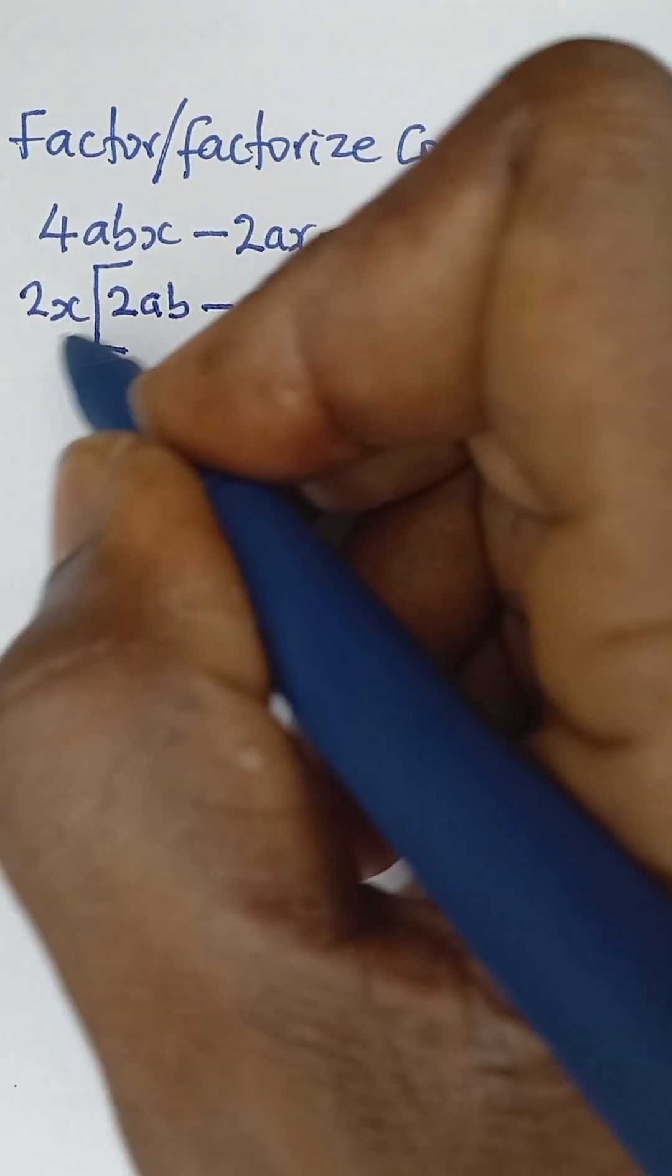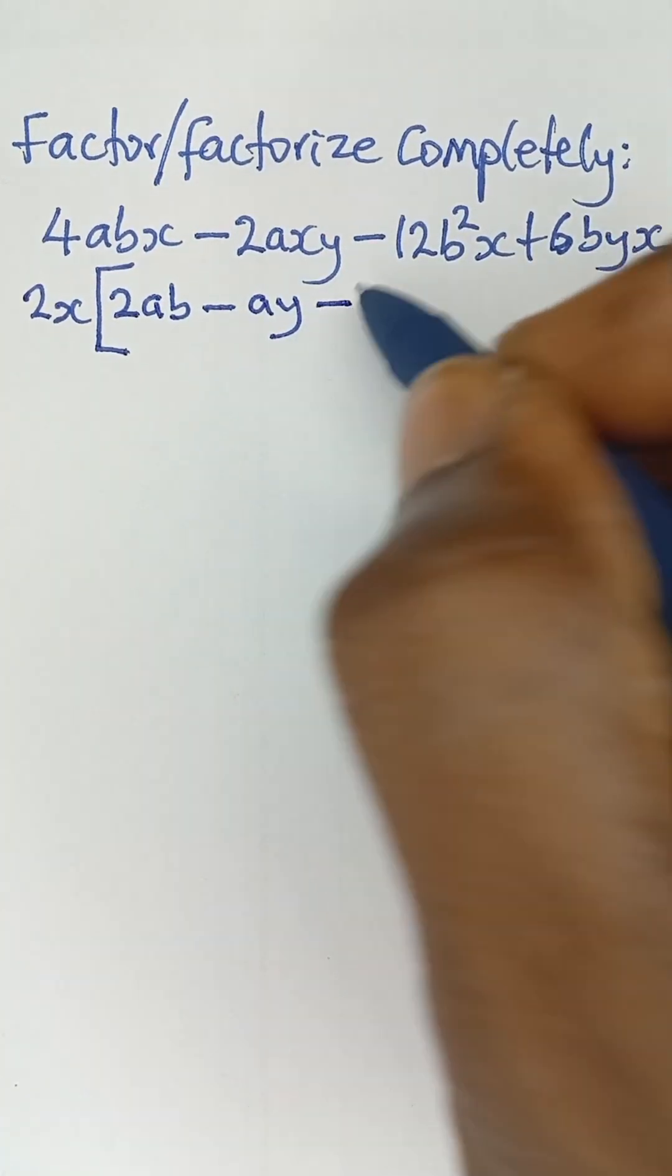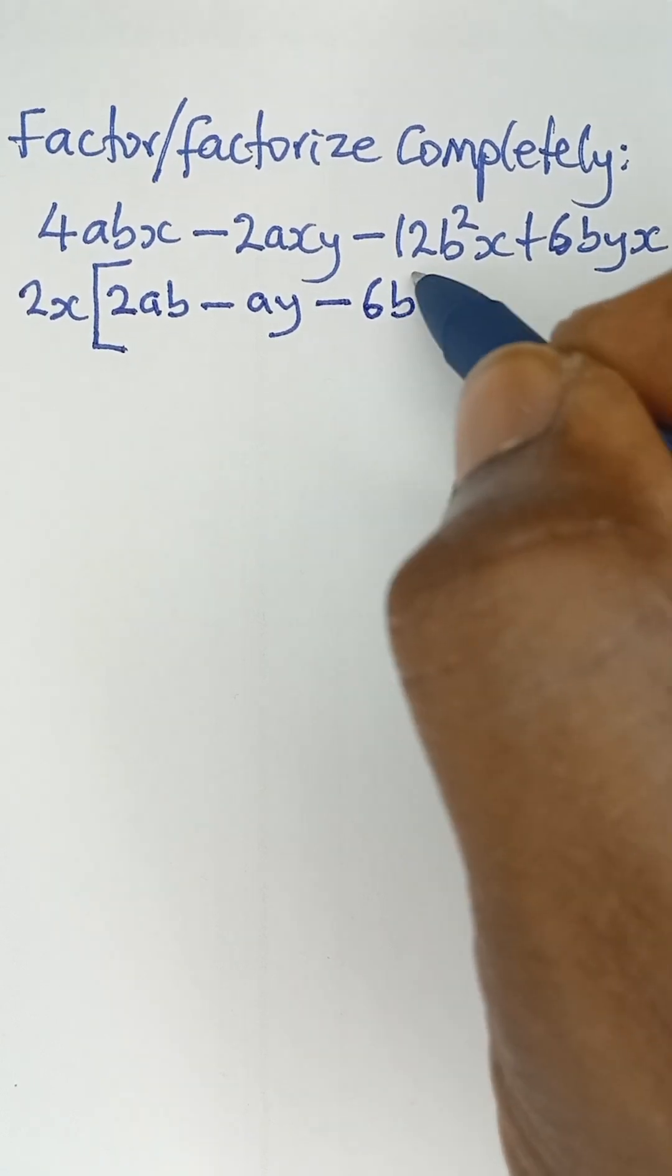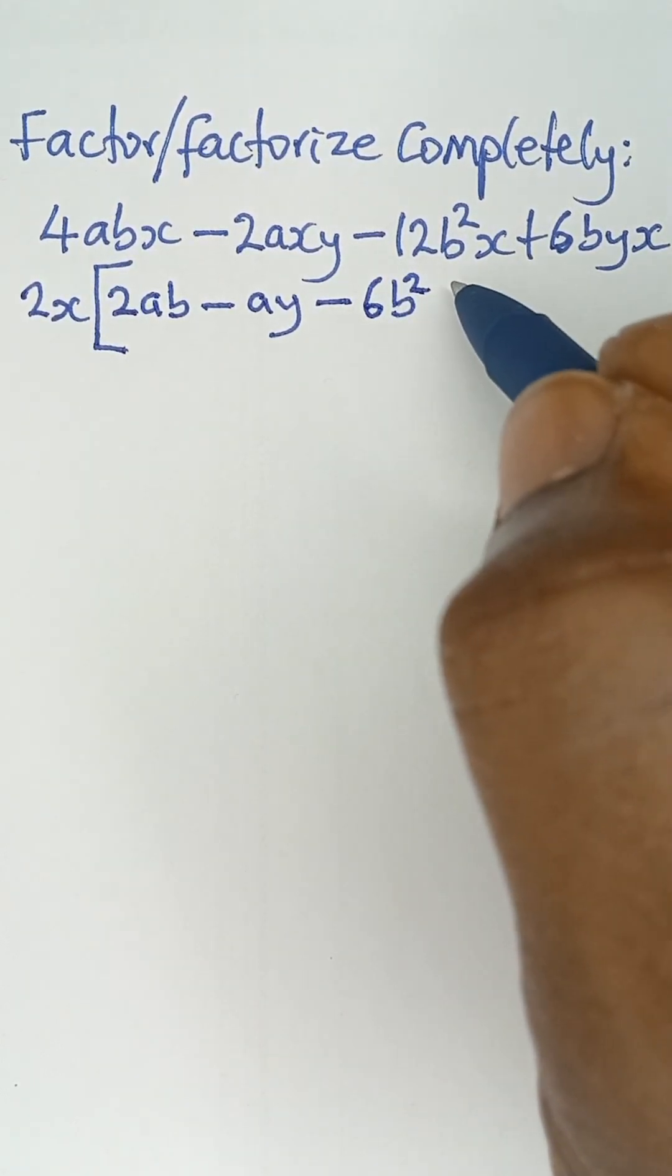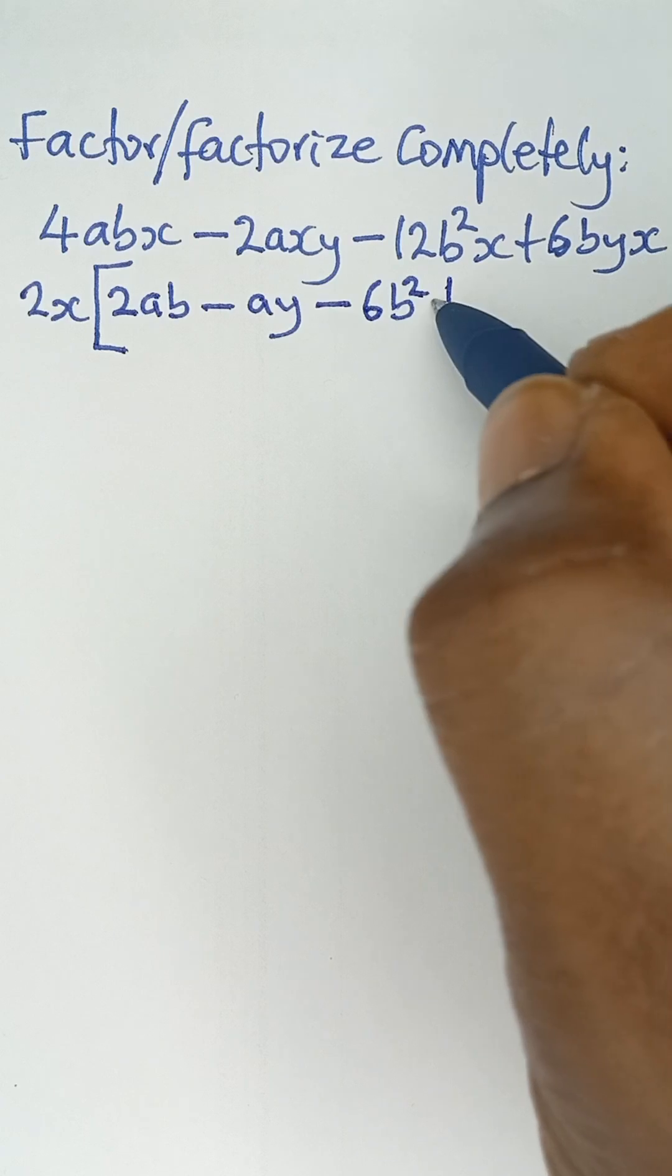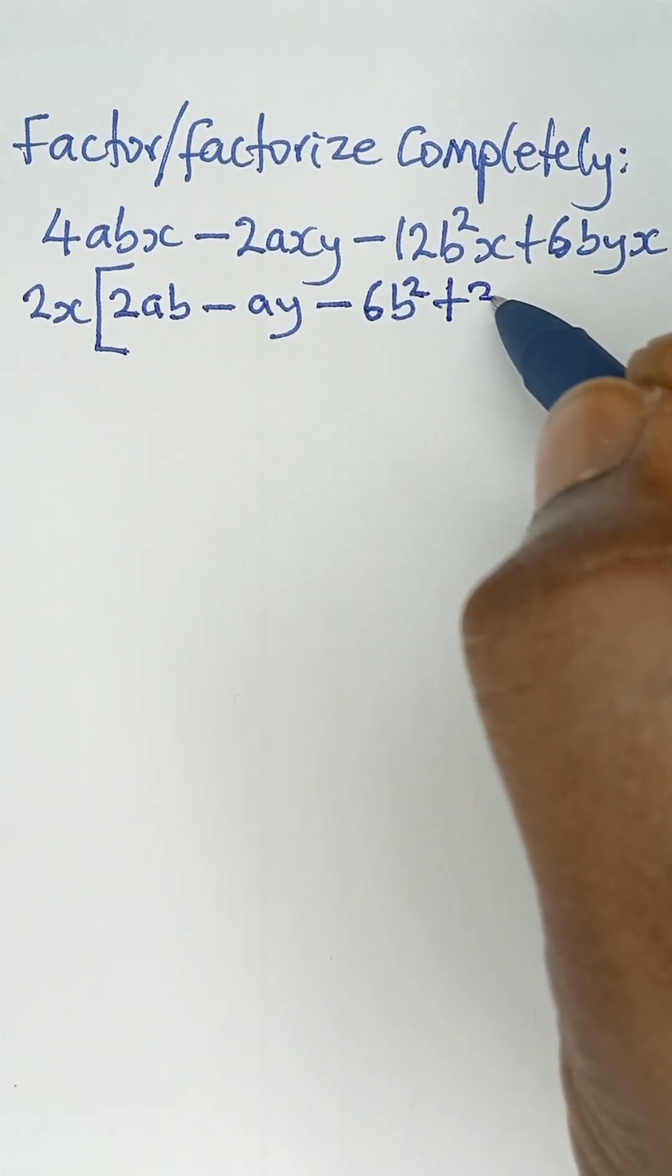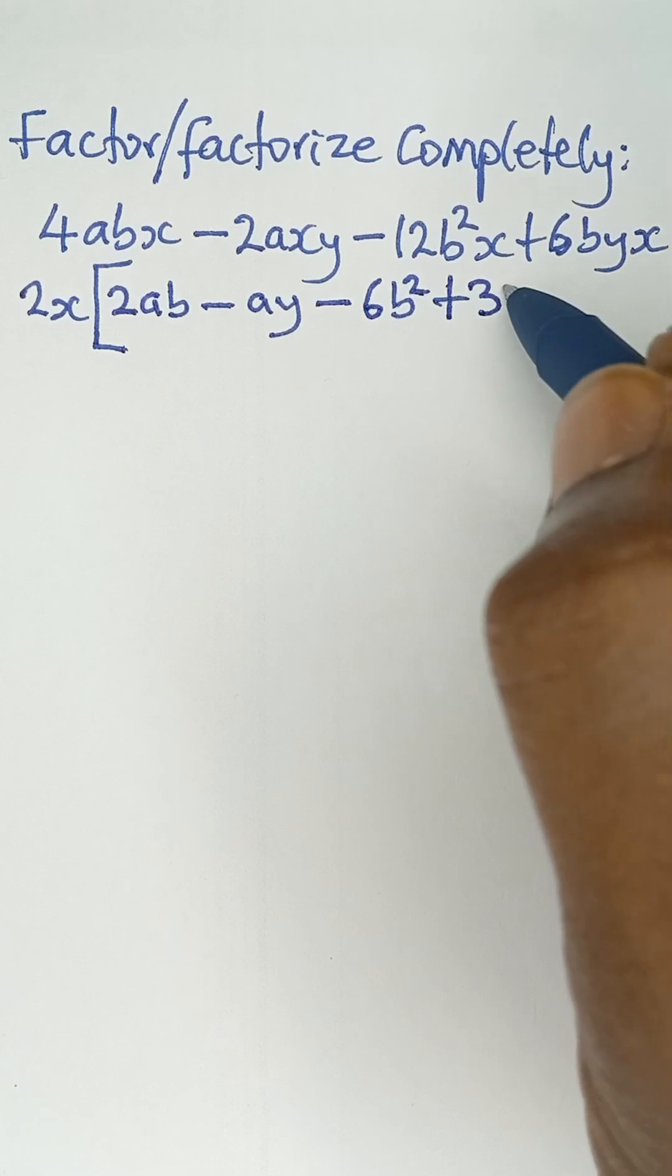And then this divided by 2x, I'll be left with 6b squared, just 6b squared. And then finally plus 6 divided by that, I have 3, and then by.